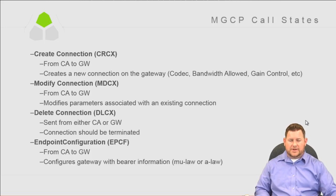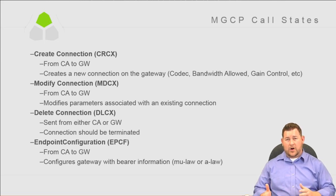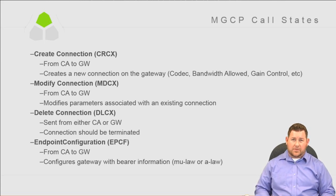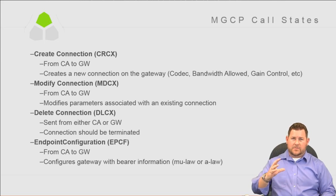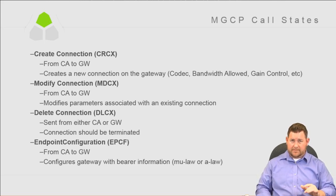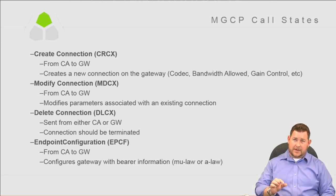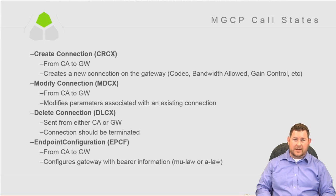Moving on to MGCP call states, which are important to know because they define the types of messages in MGCP from the call agent to the gateway or vice versa. The first is Create Connection, CRCX — from the call agent to the gateway. It creates a new connection on the gateway specifying codec, bandwidth allowed, gain control, etc. The next is Modify Connection, MDCX, also from the call agent to the gateway. It modifies parameters of an existing connection, such as adding an IP address.